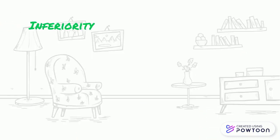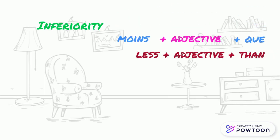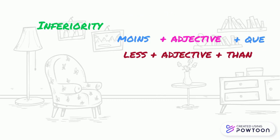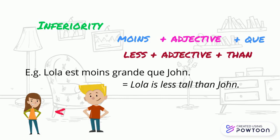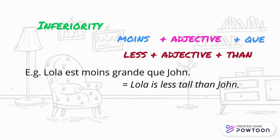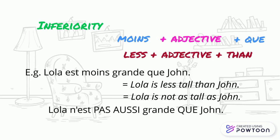Then you have inferiority, with the structure: moins + adjective + que — meaning 'less + adjective + than'. For instance, 'Lola est moins grande que Jeanne' — Lola is less tall than Jeanne. However, in English you will probably say more often: 'Lola is not as tall as Jeanne.' You can also say 'Lola n'est pas aussi grande que Jeanne' in French, but it's less common.